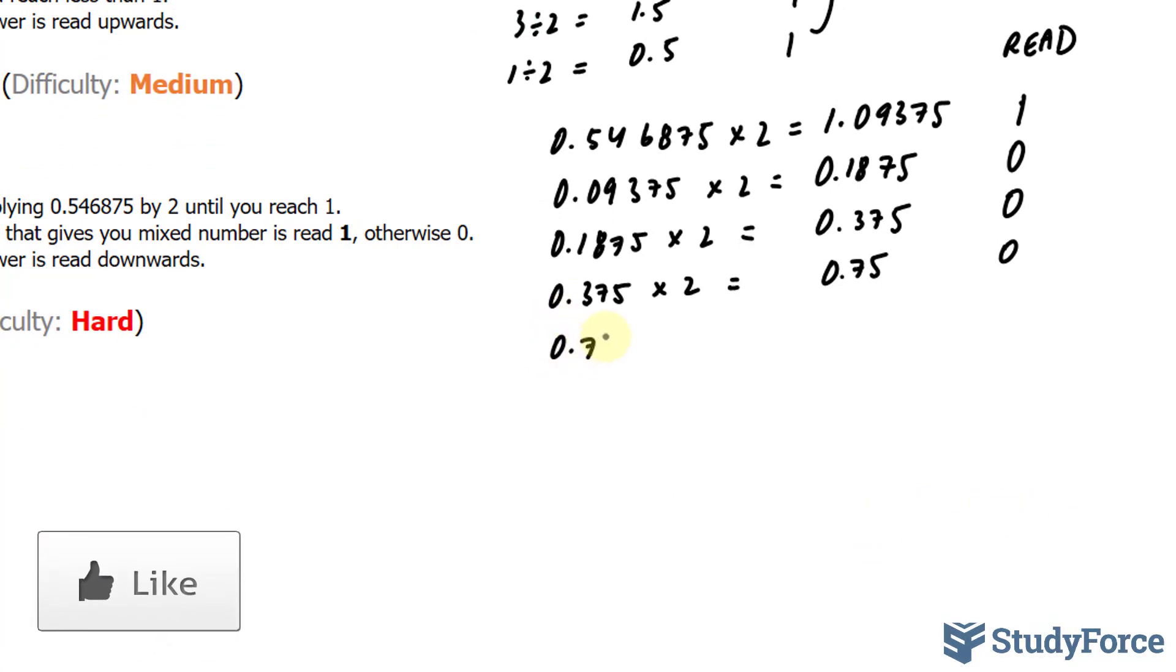Next, we'll take 0.75 and multiply that by 2. I end up with 1.5. 1.5 is a mixed fraction, so that gets a 1. There's a whole number. And I'll take this 0.5, multiply that by 2, and I end up with 1. Once you reach 1, that's it, you're done. And of course, this is read as 1.